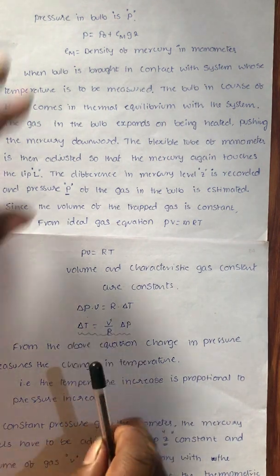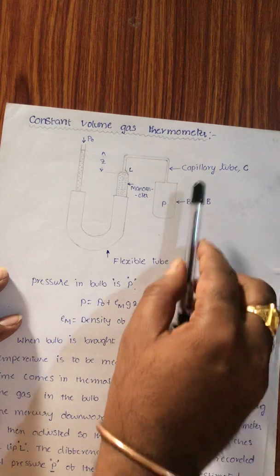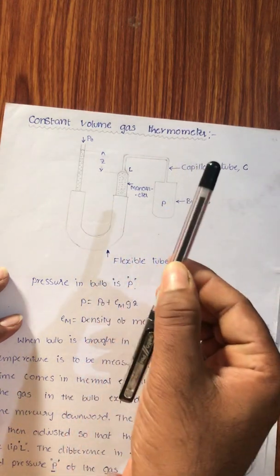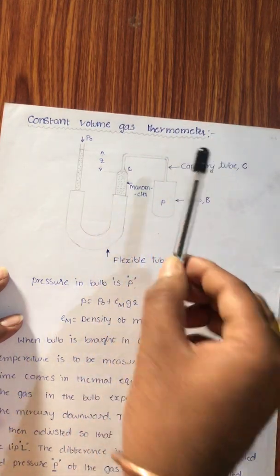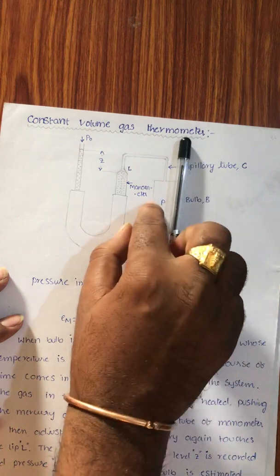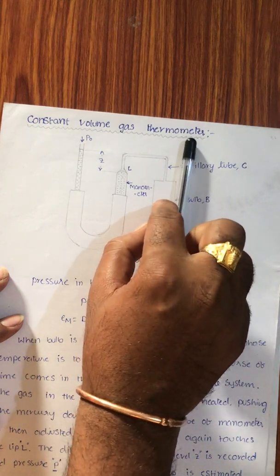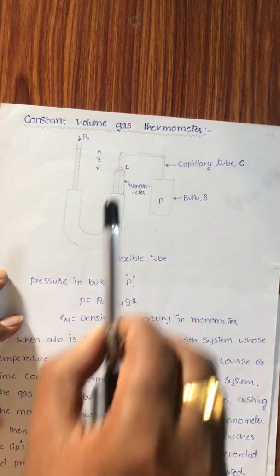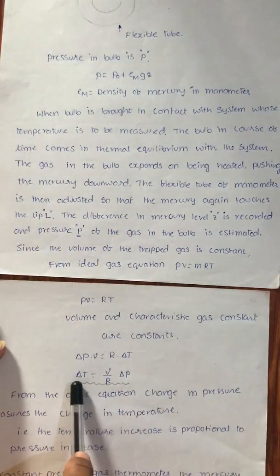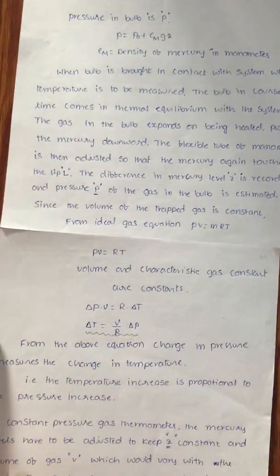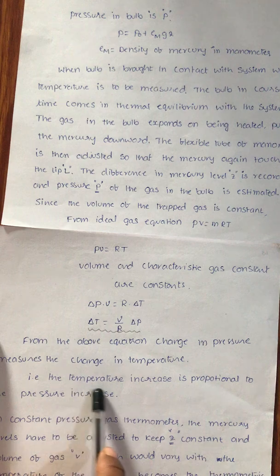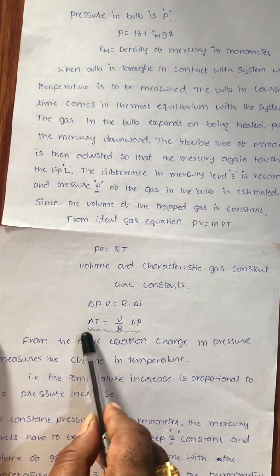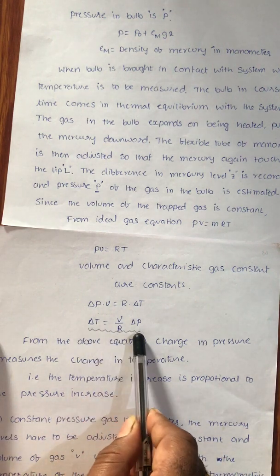If the system has a higher temperature, more heat is transferred, the bulb temperature increases, and this increases the pressure. That increase in pressure measures the increase in temperature. So here the thermometric property is the pressure.